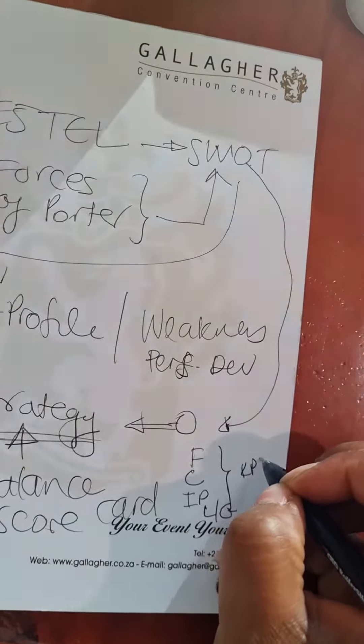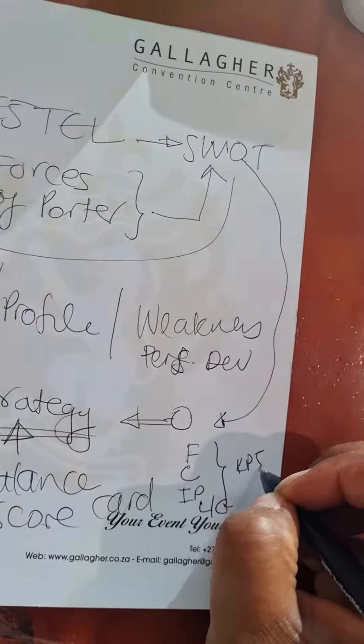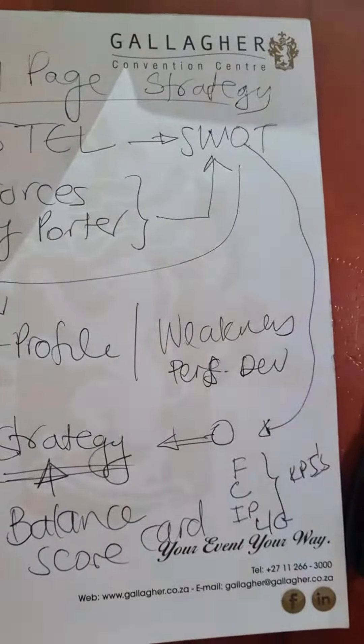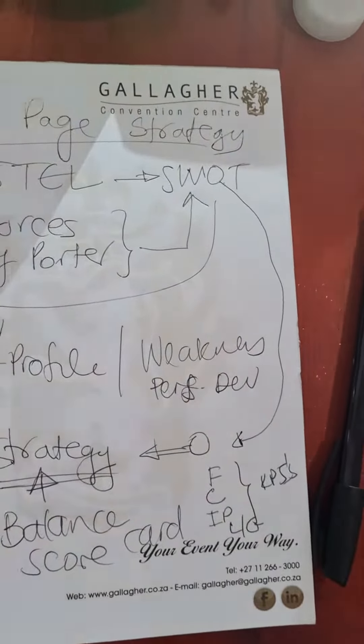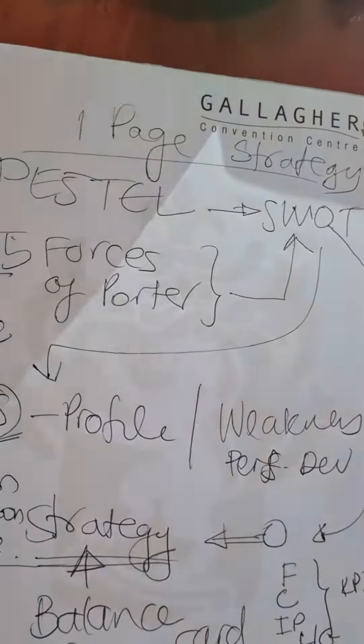Each of these perspectives has KPIs and initiatives that you will use as projects. That is how you will design a one-page strategy. That's the best way, especially for someone who has not done any business model or strategy before. That is how you will do it — thank you.